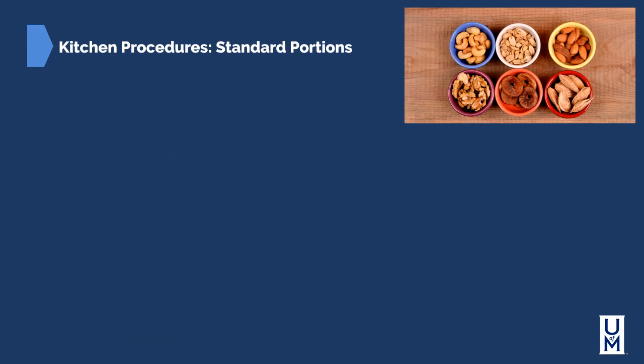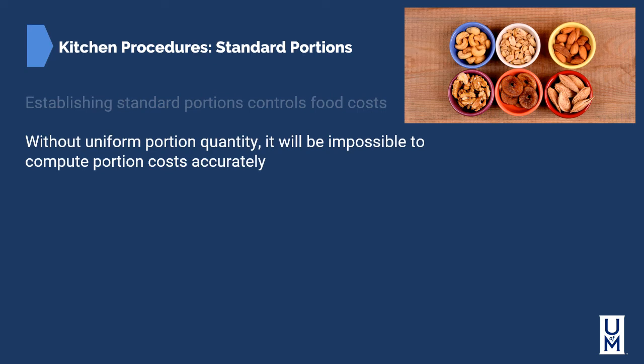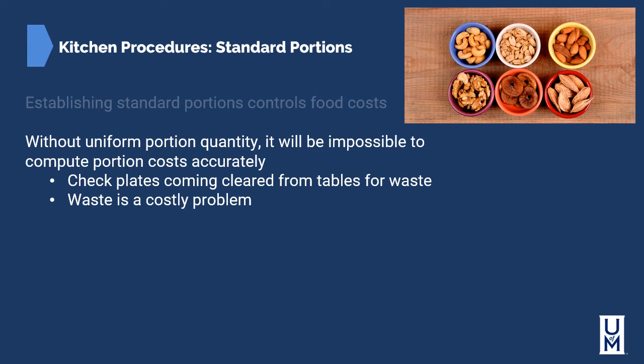Standard portions are important in the restaurant industry. We want to give the exact same portions to everyone — not just for consistency, but also for cost control. Without uniform portion quantity, it is impossible to compute portion costs accurately. For example, if I serve 2 extra ounces of mashed potatoes per order beyond spec, and mashed potatoes cost 5 cents an ounce, that's 10 cents per portion. Selling 200 portions a day equals $20 gone daily — over a year, that's $7,240 lost on just 2 ounces of mashed potatoes.